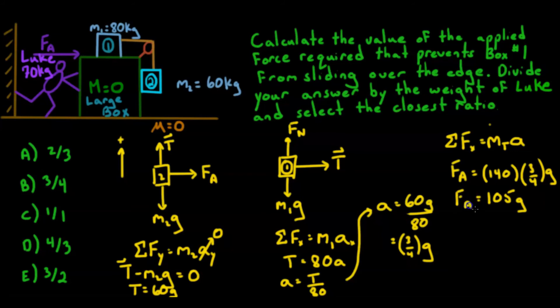And then we were simply asked to take that applied force and divide it by the weight of Luke. So Luke is over here at 70. The weight then would be mass times gravity, or 70 times g. So our ratio that the question is asking for is 105g divided by 70 times g.